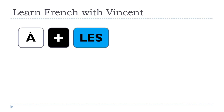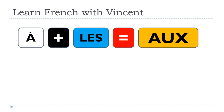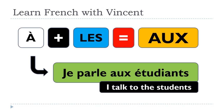When you use the plural form, it becomes AUX (A-U-X): 'Je parle aux étudiants.' Here you can hear the liaison between AUX and 'étudiant' — I make the Z sound: 'aux étudiants.' This is what we call the liaison. 'Je parle aux étudiants' — I talk to the students. I used the plural form because 'étudiants' has the plural marker S.